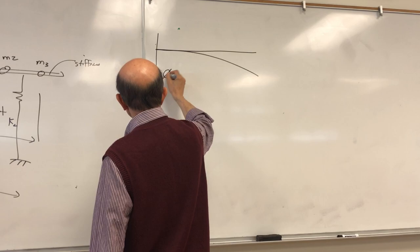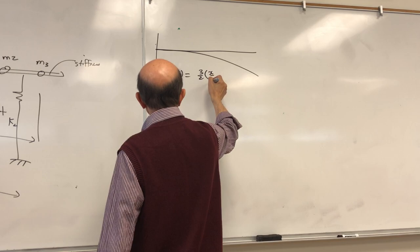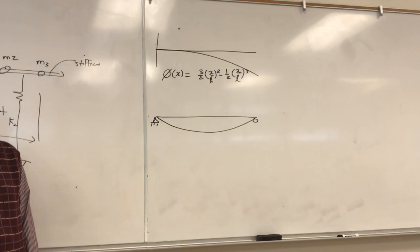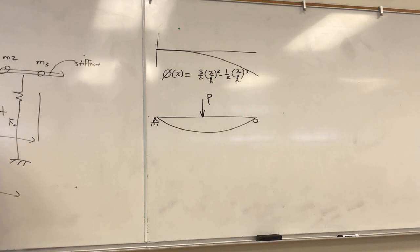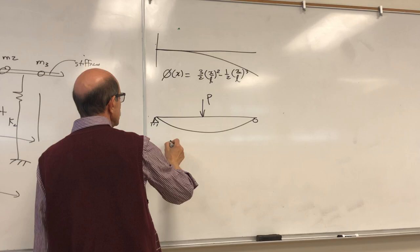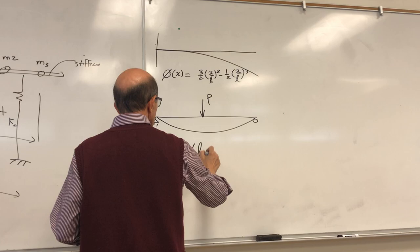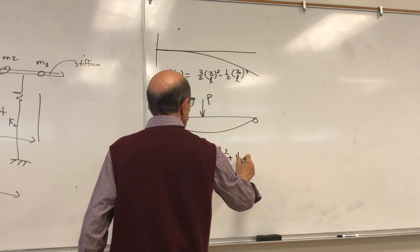For instance, for a cantilever beam, phi(x) was (3/2)(x/L)^2 minus (1/2)(x/L)^3. For a simply supported beam, the first mode of vibration resembles the static deformation under a center load, and the displacement shape is given by: 6Lx^2 + 4x^3 — derived from the beam bending differential equation with appropriate boundary conditions.